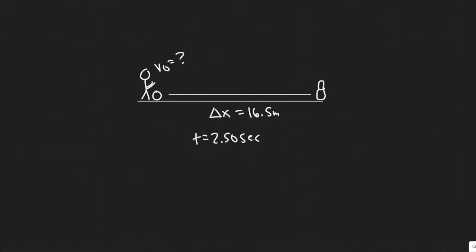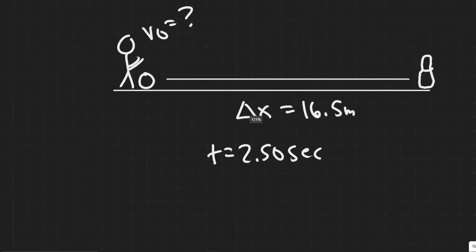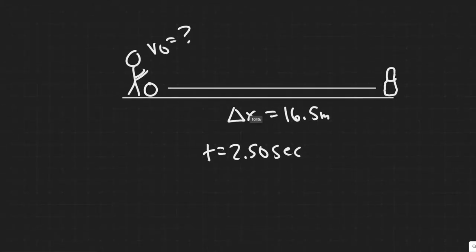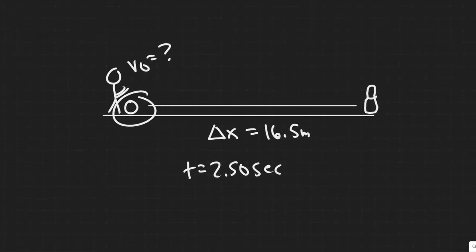So we're given some information here. First let's understand what's going on. This person is going to be bowling this ball with some initial velocity. We don't know what that is, but we're trying to find it. And then he's going to bowl the ball, it's going to go like this, and it's going to hit these pins.